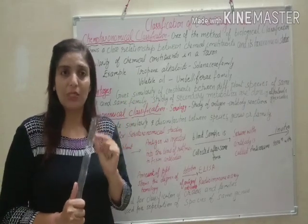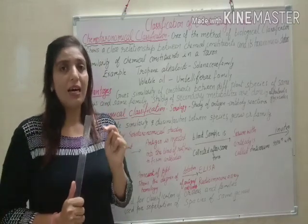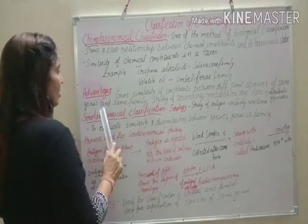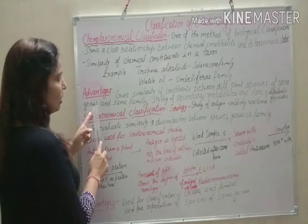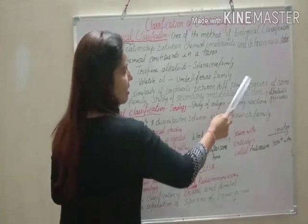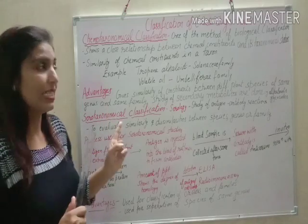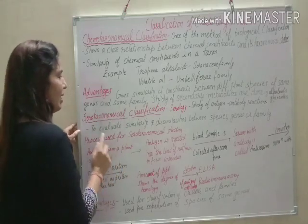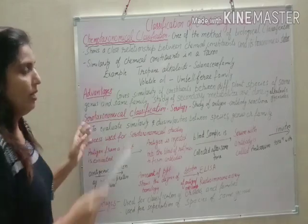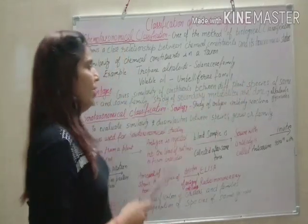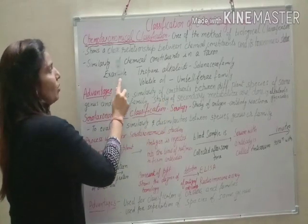For example, we have studied the genus Mentha. Under genus Mentha, there are two different species — Mentha piperita and Mentha spicata. These are two different species of the same genus, Mentha. Because they share similarity in chemical constituents, we keep them together in chemo-taxonomical classification.